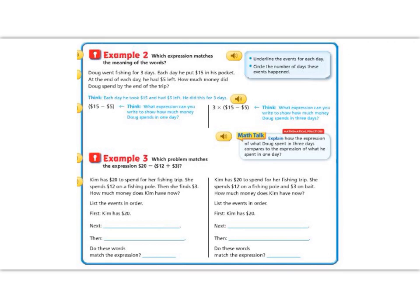Let's practice again on example 2. Doug went fishing for 3 days. Each day he put $15 in his pocket. At the end of each day he had $5 left. How much money did Doug spend by the end of his trip? Before we start working this problem out, let's read what's in our blue box. It says underline the events for each day. Okay. He went fishing for 3 days. And each day he put $15 in his pocket. So every day, day 1 $15 in his pocket, day 2 $15 in his pocket, day 3 $15 in his pocket. Okay. The next one says circle the number of days these events happened. I underlined it before, but it says Doug went fishing for 3 days.